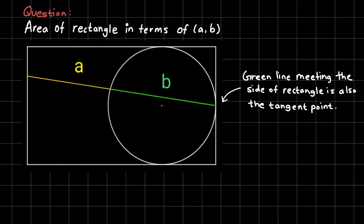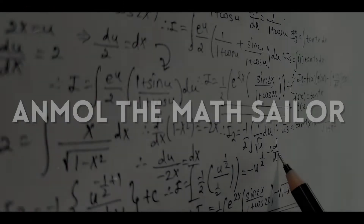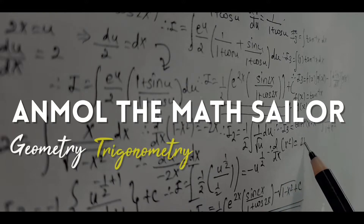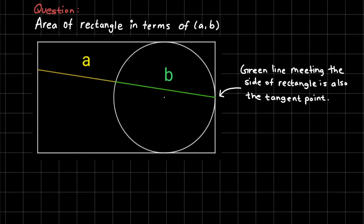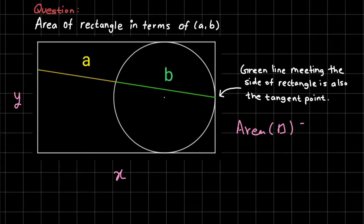Now let us see the solution. We start by taking the length and breadth of this rectangle as variables. Let the length of the rectangle be X units and the breadth be Y units. The question asks for the area in terms of A and B, and the area is X times Y. So our goal is to find the value of X times Y in terms of A and B.